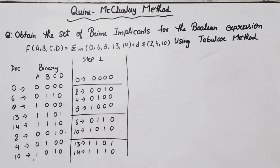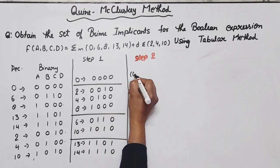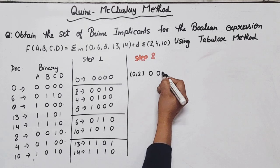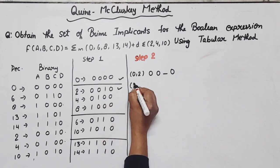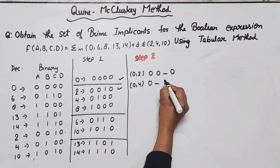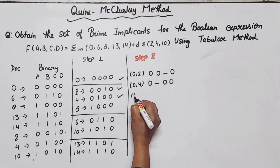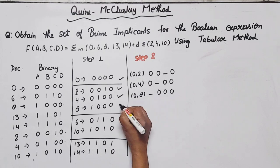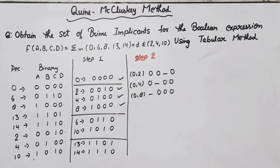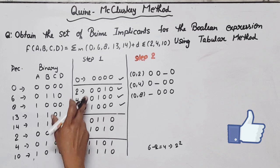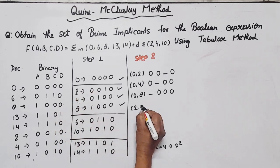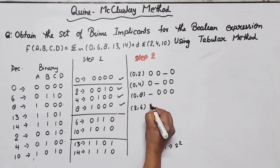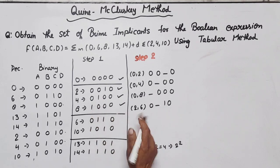Now Step 2 — we will do reduction, forming pairs. We compare the group of 0 ones with the group of 1 one. For 0 and 2: there is a change in only 1 bit, so they pair. For 0 and 4: similarly possible. For 0 and 8: also possible, with a dash marked at the differing bit position. We get pairs (0,2), (0,4), and (0,8).